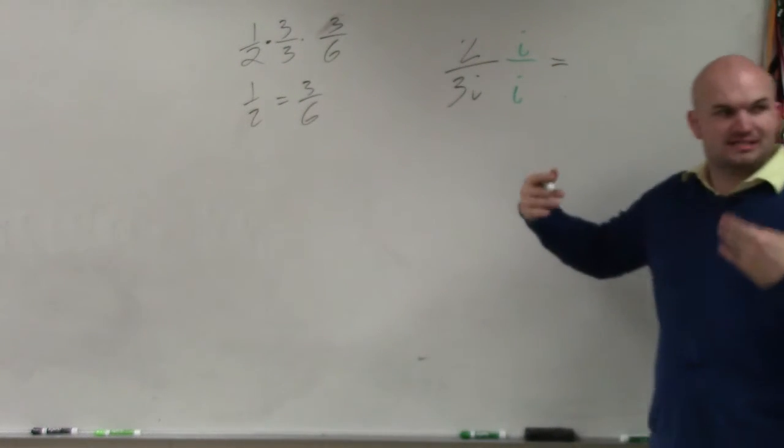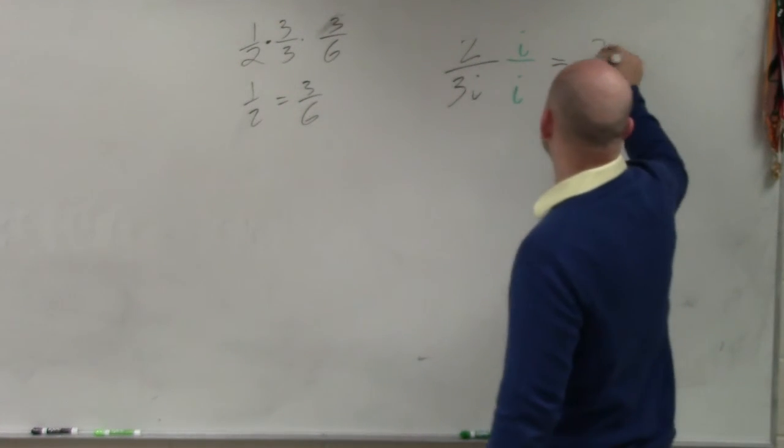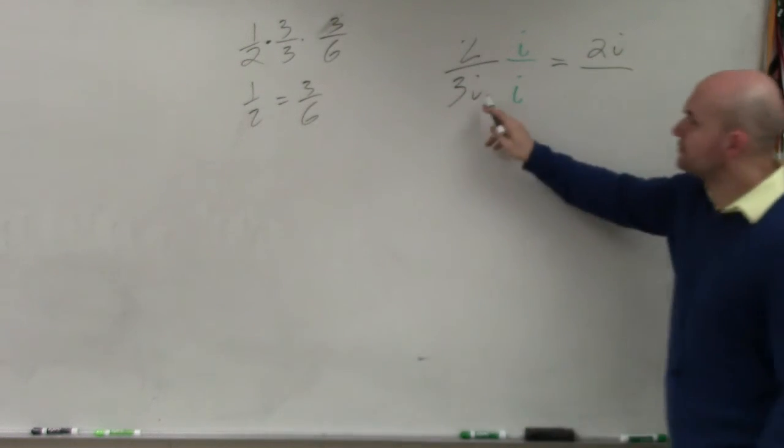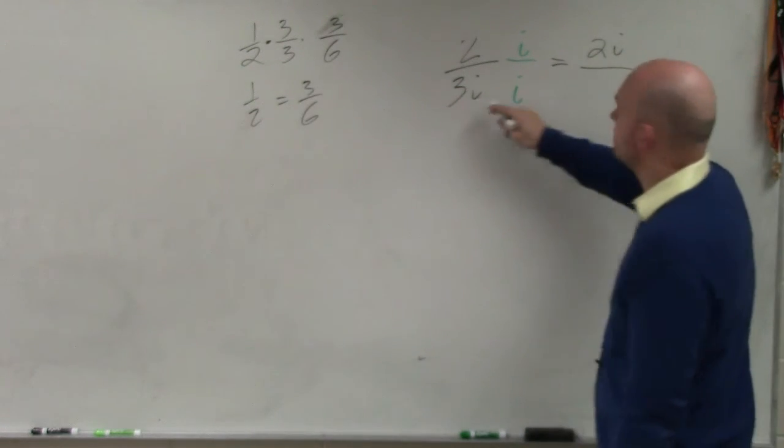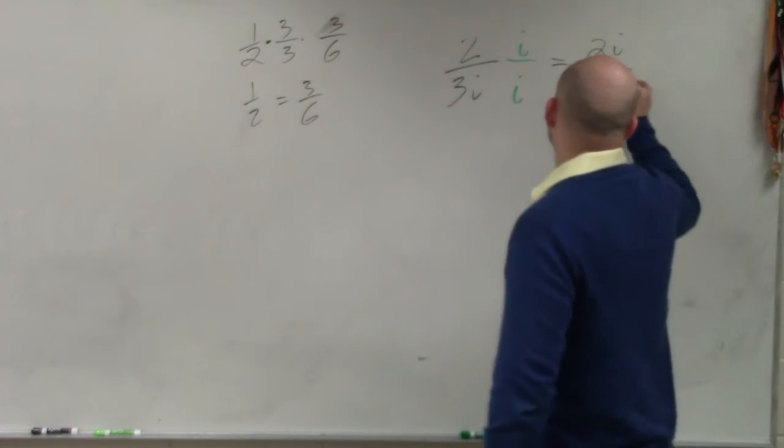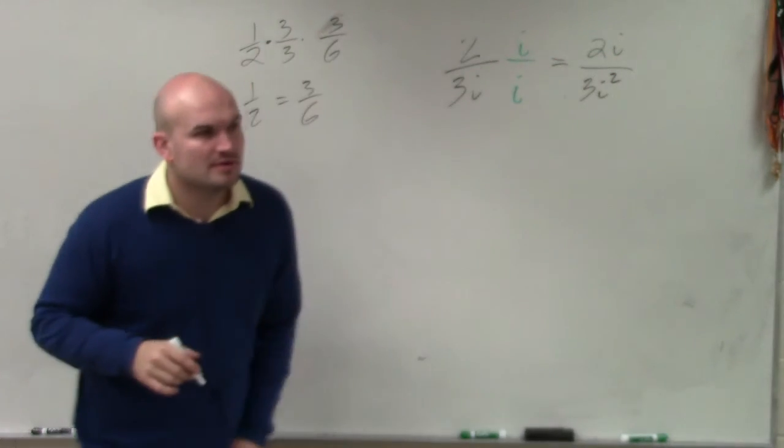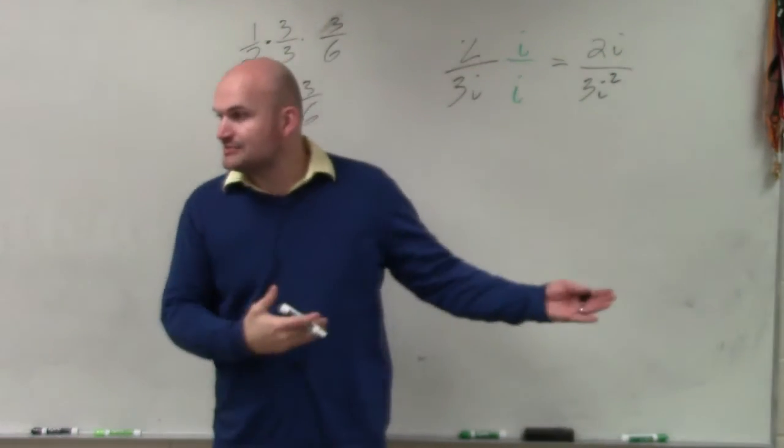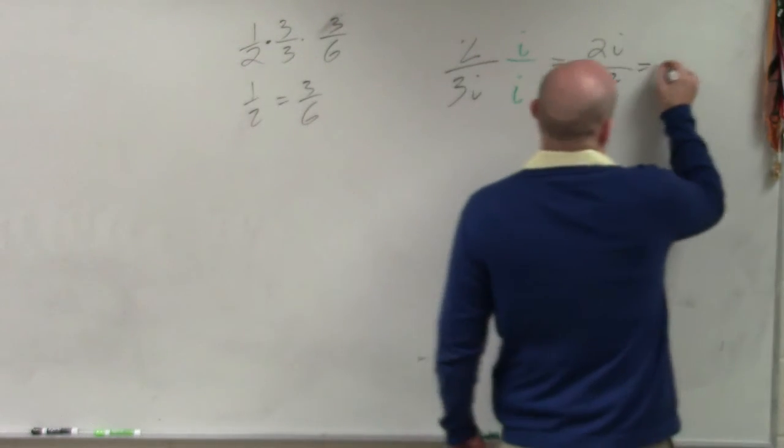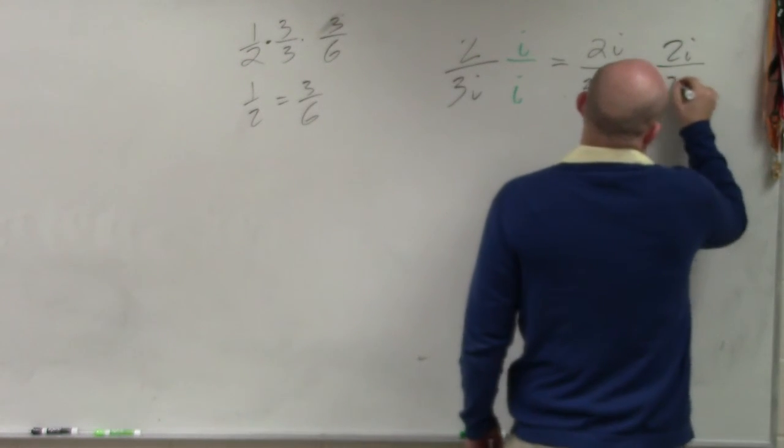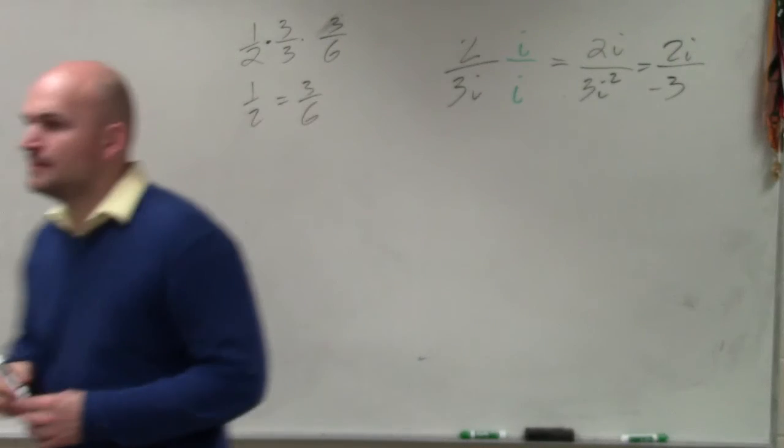2 times i is 2i divided by 3 times i squared is 3 times, this would be 3i squared. And what do we say i squared is equal to? Negative 1. Negative 1 times 3 is? Negative 3. Done. That's it.